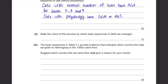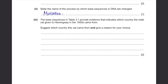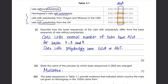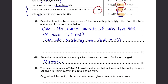State the name of the process by which base sequences in DNA are changed — it's called mutation. The base sequences in Table 3.1 provide evidence about which country the male cat given to Hemingway came from. Hemingway's cats with polydactyly had G, G, A as their base sequence for bases 7, 8, and 9. Cats with polydactyly from Oregon and Missouri in the USA had the same sequence — G, G, A. So it's obvious the cat came from Oregon and Missouri in the USA.